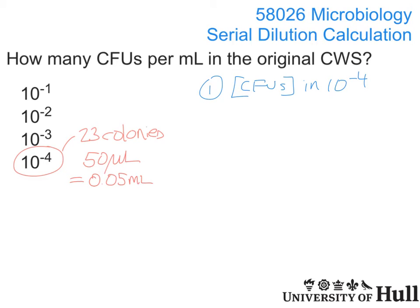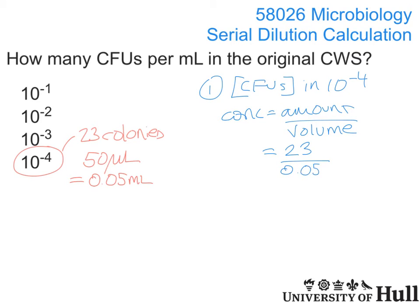Concentration is usually indicated with square brackets in a calculation. Concentration equals the amount divided by the volume — that's the universal rule for how to determine concentration. In our case, our amount is our 23 colonies and our volume is 0.05 millilitres. It will be easier to work in millilitres because the question is asking for mils. So that gives us a concentration of 460 colony-forming units per mil.